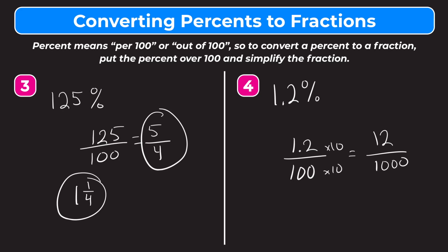So if we notice, we have 12 and 1000, and they are both divisible by 4. So let's go ahead and do that. We have 12 divided by 4 on the top, that's going to give us 3 as our numerator. And then 1000 divided by 4 is going to give us 250 as our denominator. So that means that 1.2% written as a fraction is 3/250. That is your final answer.